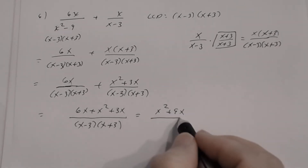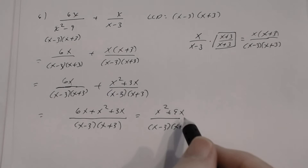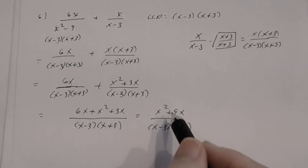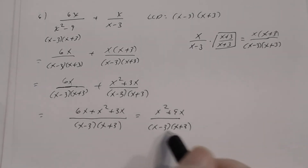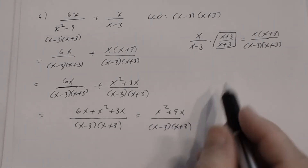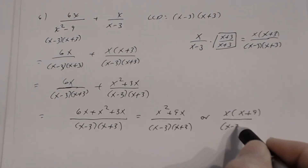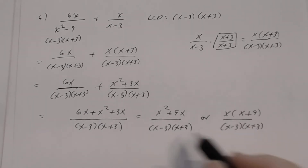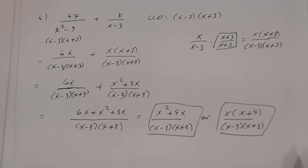Factor the numerator: x² + 9x = x(x + 9). The denominator is already factored: (x−3)(x+3). There's no common factor between x(x+9) and (x−3)(x+3), so nothing reduces. The answer is x(x + 9)/[(x−3)(x+3)], or equivalently (x² + 9x)/[(x−3)(x+3)].